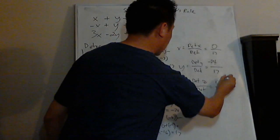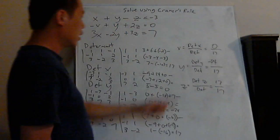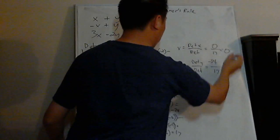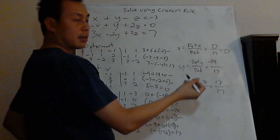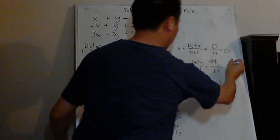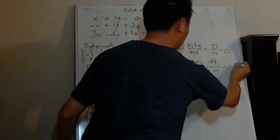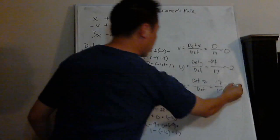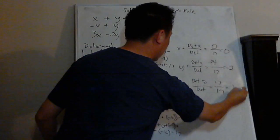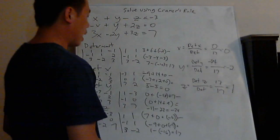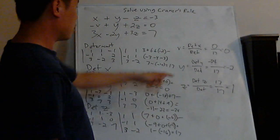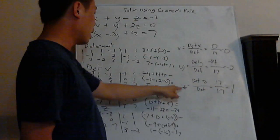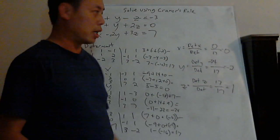So putting it all together: x equals 0 over 17 which is 0. Y equals negative 34 over 17 which is negative 2. Z equals 17 over 17 which is 1. So the solution is x equals 0, y equals negative 2, and z equals 1.